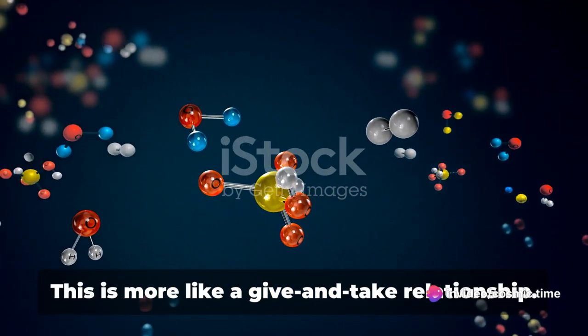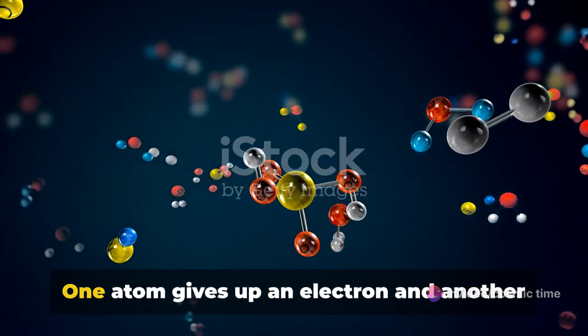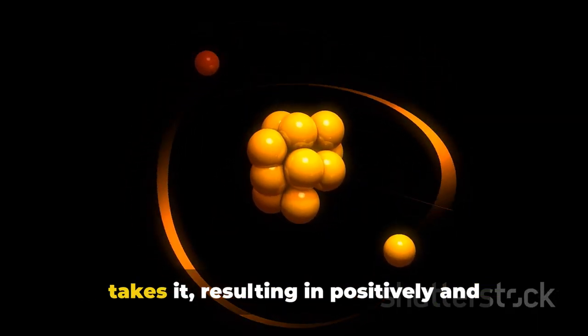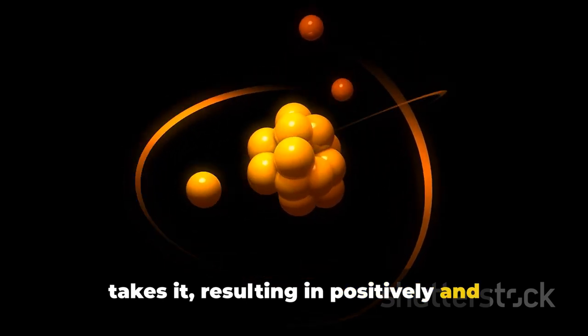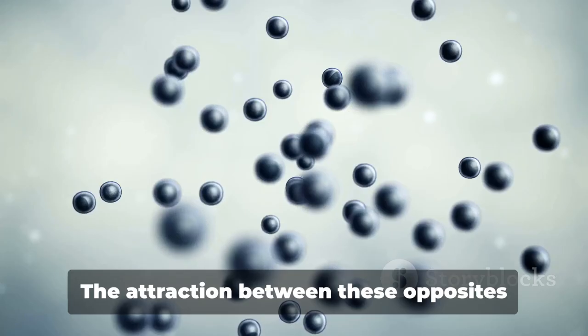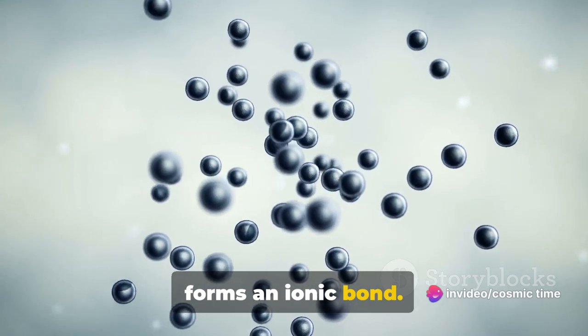Next, we have ionic bonds. This is more like a give-and-take relationship. One atom gives up an electron and another takes it, resulting in positively and negatively charged ions. The attraction between these opposites forms an ionic bond.